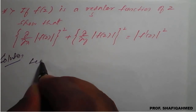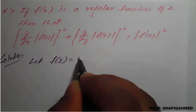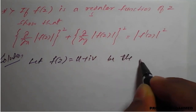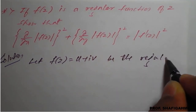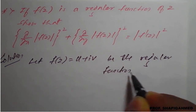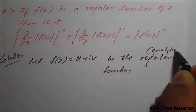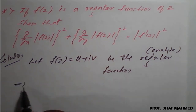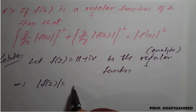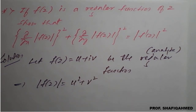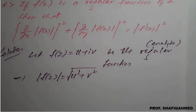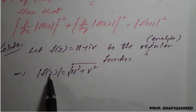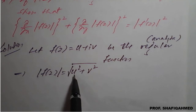Solution. Let the function f(z) = u + iv be a regular (analytic) function. Then f(z) = u + iv, which implies |f(z)| = √(u² + v²). Squaring both sides, we get |f(z)|² = u² + v².